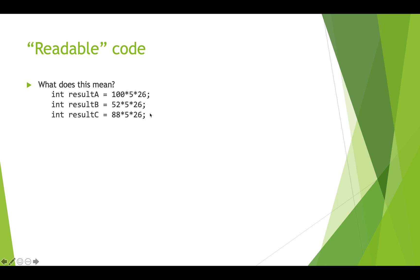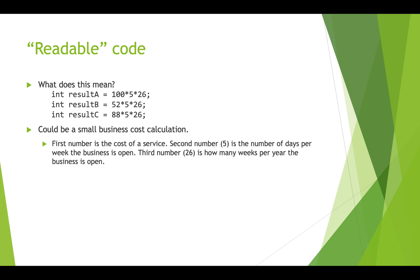What we want to aim for is readable code. Here we've got three lines of code with just numbers in them — what do these numbers mean? What do they represent? They could be almost anything. Maybe they're a business cost calculation: the first number is the cost of a service, the second number five is the number of days per week the business is open, and the third number 26 is the number of weeks per year. Could be — we don't know. Let's assume it is. How could we name this better?